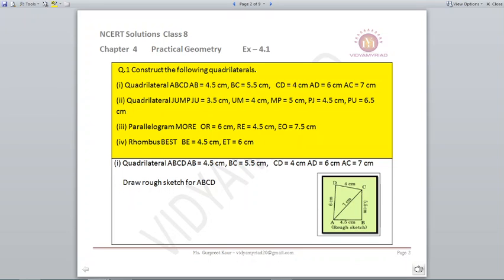Number 1, you have to make a quadrilateral ABCD whose measurements are given as AB 4.5 cm, BC 5.5 cm, CD 4 cm, AD 6 cm and AC as equal to 7 cm.